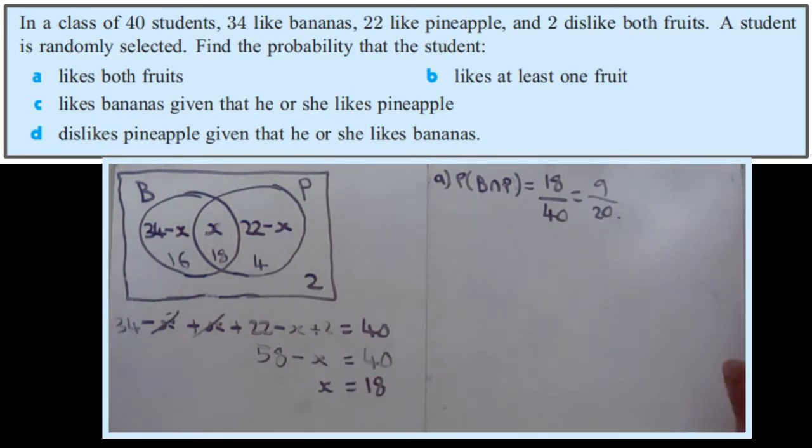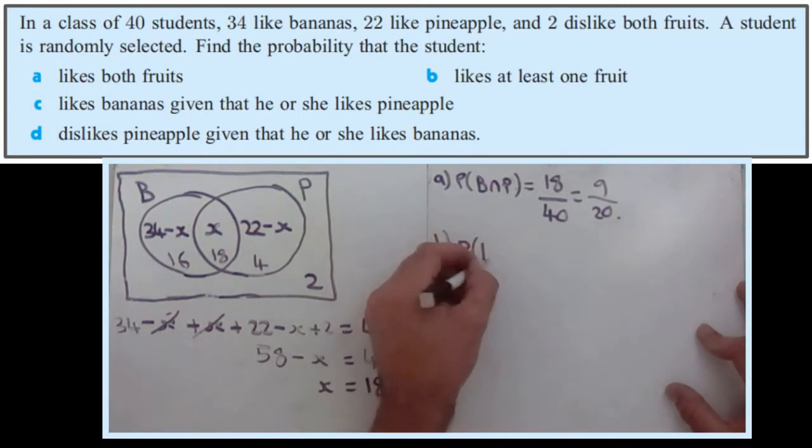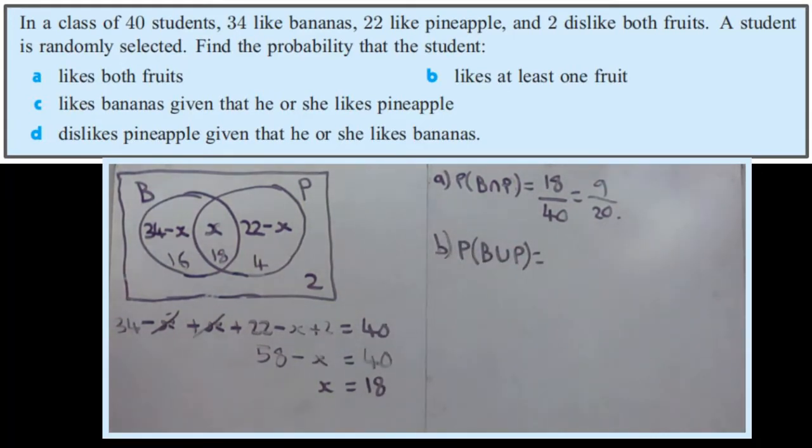Part B, the probability they like at least one. Well, if they like at least one, so that means they like bananas or pineapples or both. So it's the probability that they're in the union, so they're either here or here or here.